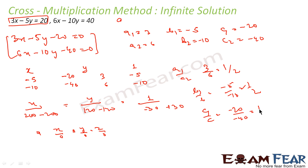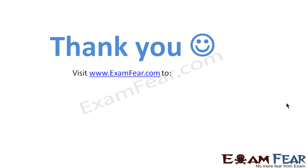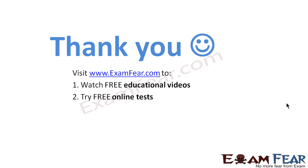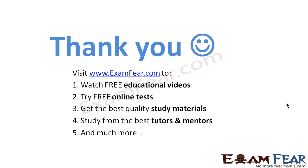x/0 = y/0 = 1/0 — since all are 0, we check the ratios: a1/a2 = 3/6 = 1/2; b1/b2 = −5/−10 = 1/2; c1/c2 = −20/−40 = 1/2. Since a1/a2 = b1/b2 = c1/c2, the system has infinite solutions. You can also just check these ratios directly without going through the full cross multiplication process. We just wanted to demonstrate the use of the cross multiplication method. Visit examfear.com to watch free educational videos, try free online tests, get the best quality study materials, and study from the best tutors and mentors. Thanks once again.